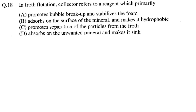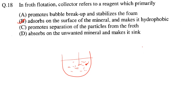In froth flotation, the collector refers to a reagent which primarily adsorbs on the surface of the mineral and makes it hydrophobic — that is option B. The collector, such as potassium xanthate, gets attached to the particle and makes it repellent to water, i.e., hydrophobic, so it does not get wet and floats out. Options C and D (promoting separation or adsorbing on the unwanted mineral to make it sink) are incorrect.